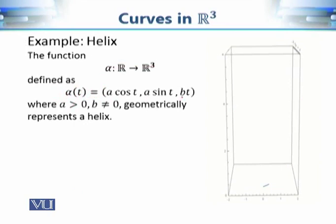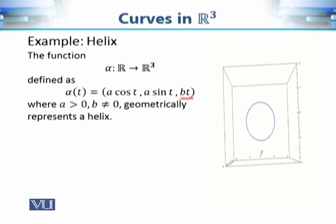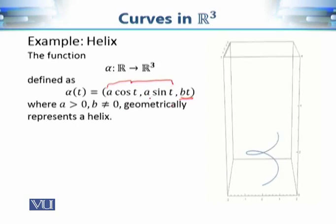Let's look at another example: alpha(t) = (a cos t, a sin t, bt). Here the z-coordinate is no longer zero — it depends on the parameter t, and as t increases the z-coordinate increases. As we track the values of this function we get some path in R³. If you look from the top, ignoring the third coordinate and looking only at the first two, we have (a cos t, a sin t), which is the parametric representation of a circle. But since the z-coordinate is also increasing, we get a helix.